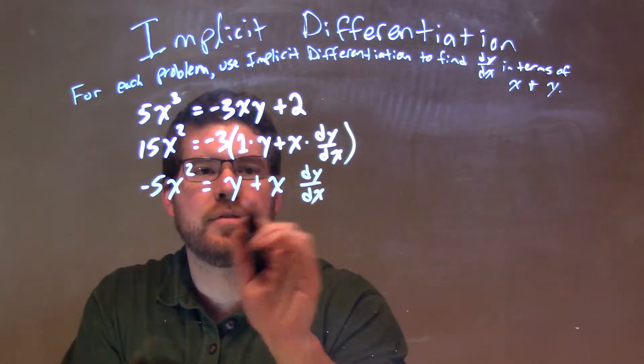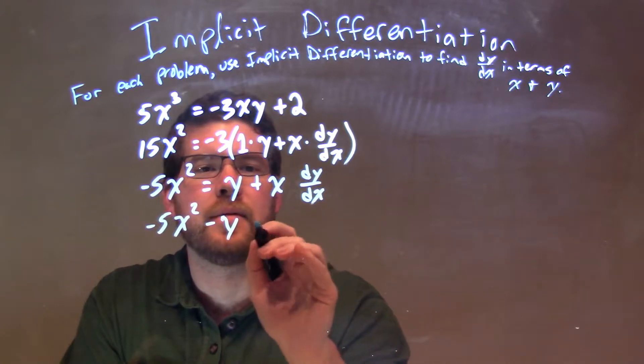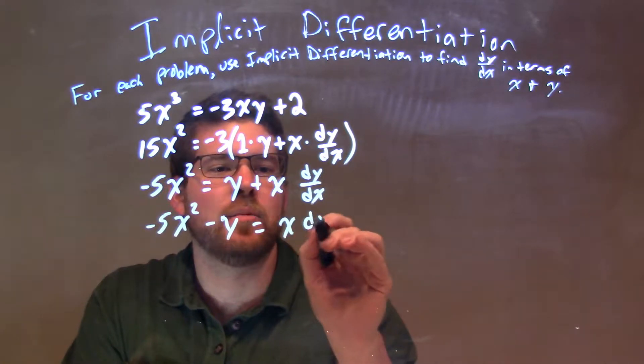Now, I'm going to subtract the y from both sides, and doing so, I have negative 5x squared minus y equals x dy/dx.